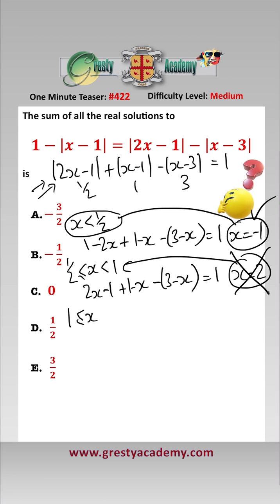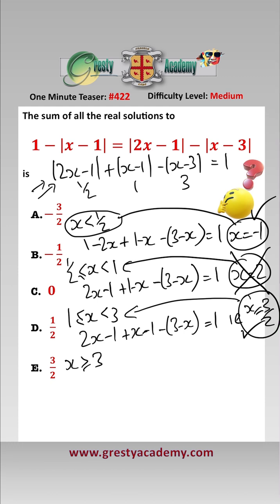The next region we need to look at is x between 1 and 3. Our equation becomes 2x minus 1 add x minus 1 minus 3 minus x equals 1, i.e. x equals 3 over 2. We have to check, is that in the region? Yes it is, so therefore that is a solution.